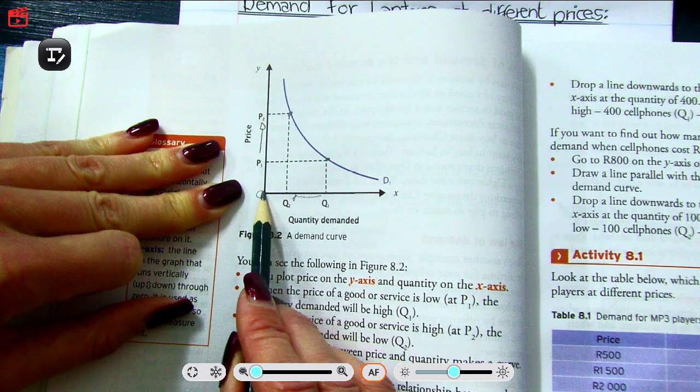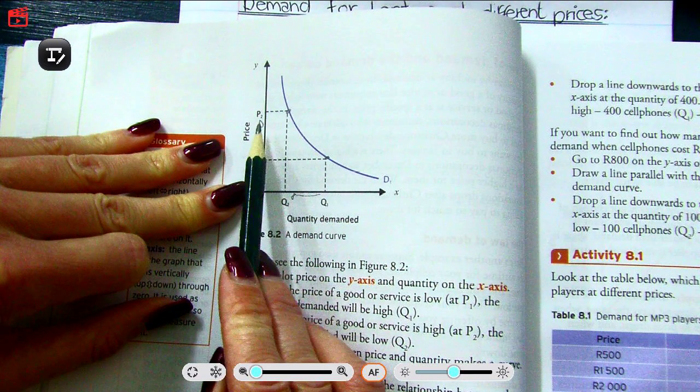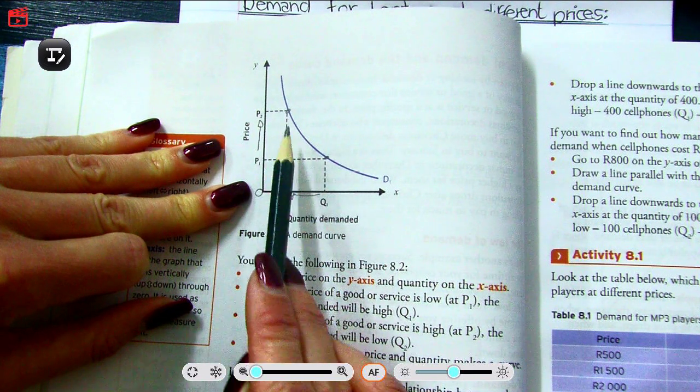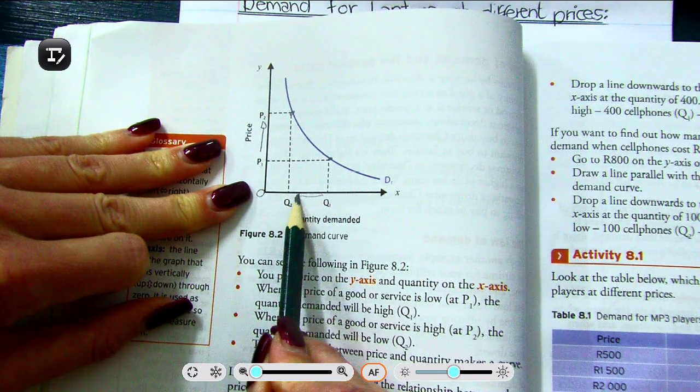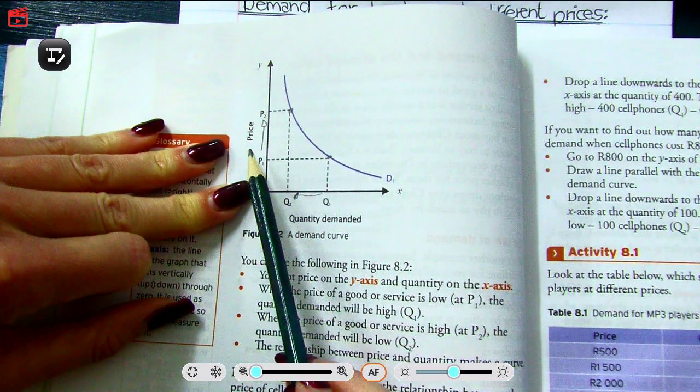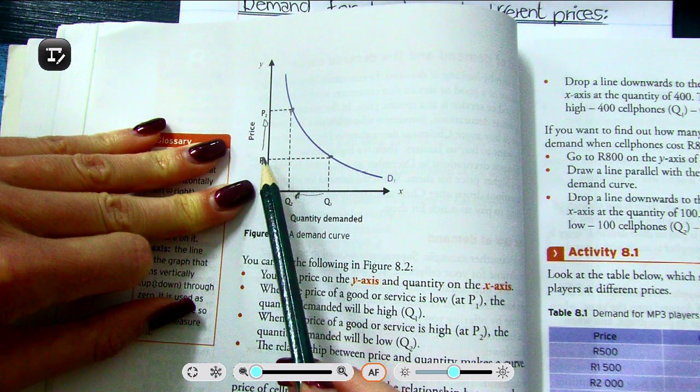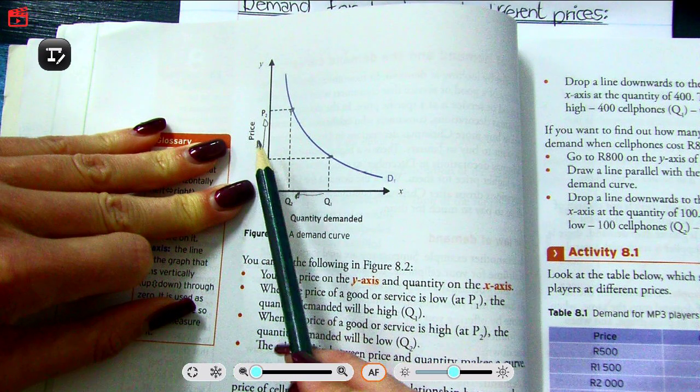Let's say this is zero. So we can see at price 2, there was a decrease in quantity demanded. Why is that? Well, that's the law of demand: there is an inverse relationship between price and quantity demanded.